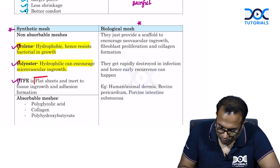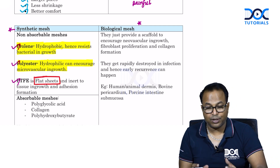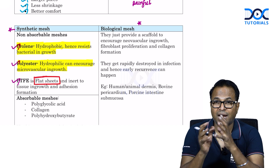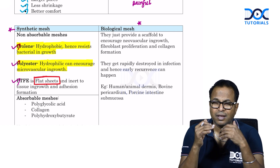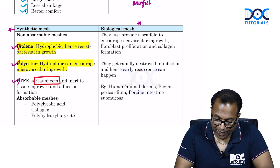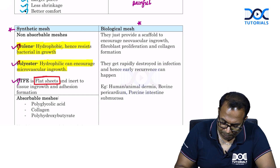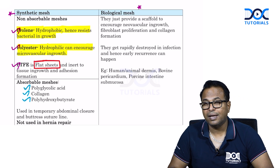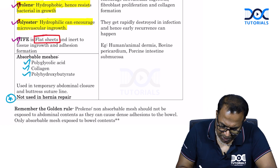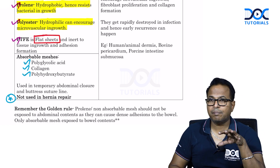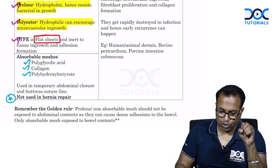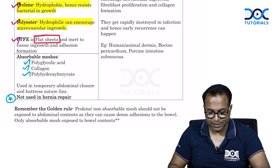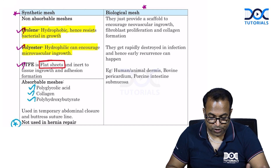PTFE is a flat sheet mesh, inert to tissue ingrowth, and used when adhesion formation is a concern, though it is also less commonly used. Absorbable meshes made of polyglycolic acid, collagen, and polyhydroxybutyrate are not used in hernia repair. Absorbable meshes are only used in temporary abdominal closures or to reinforce a suture line.